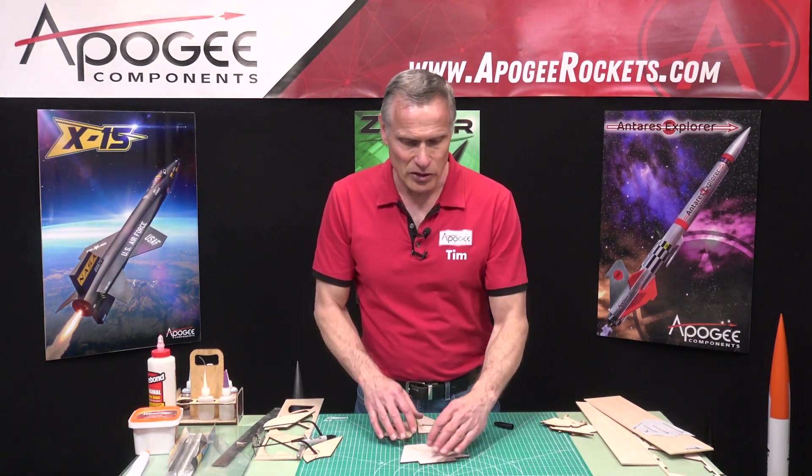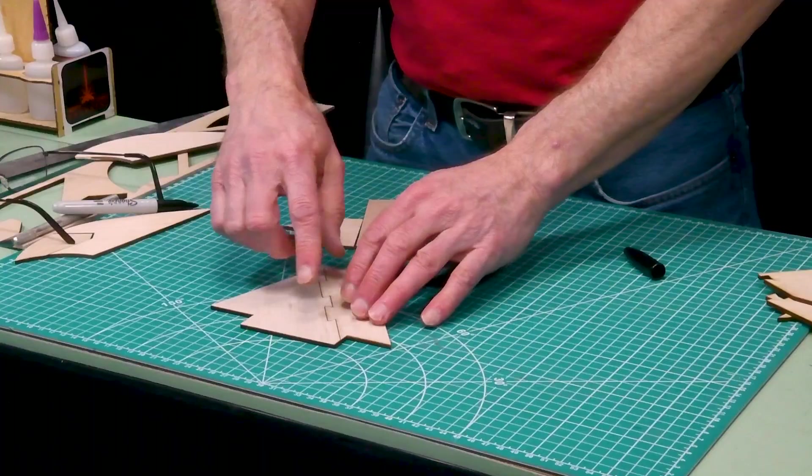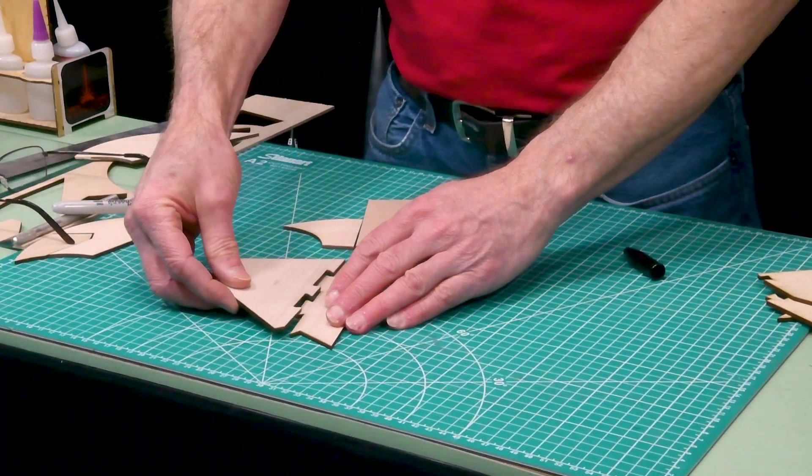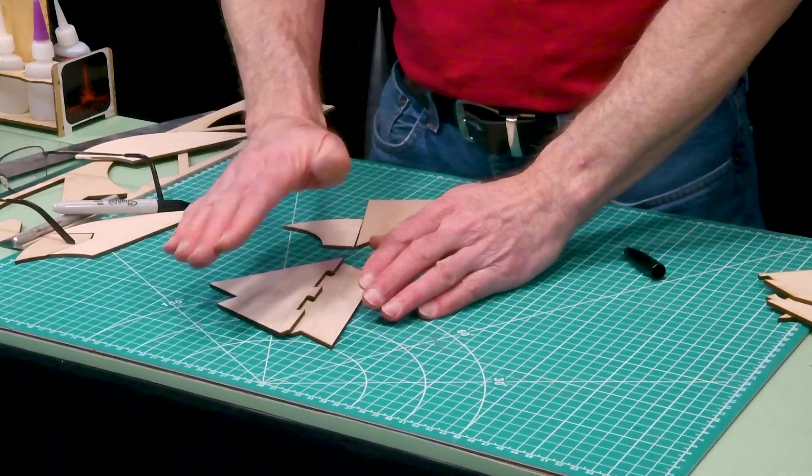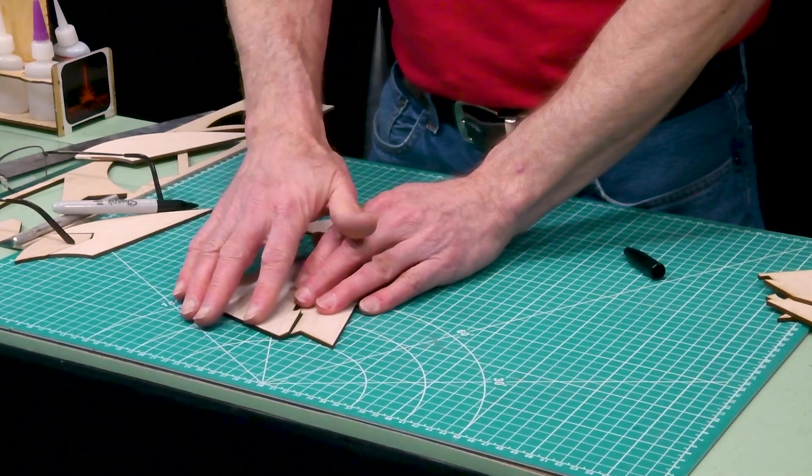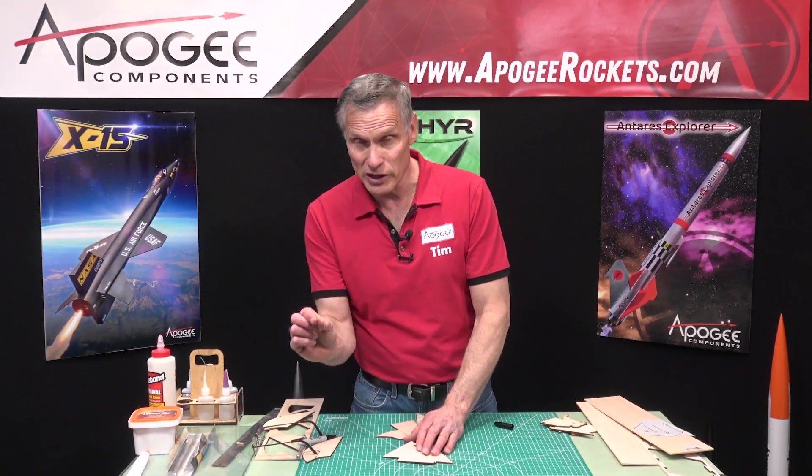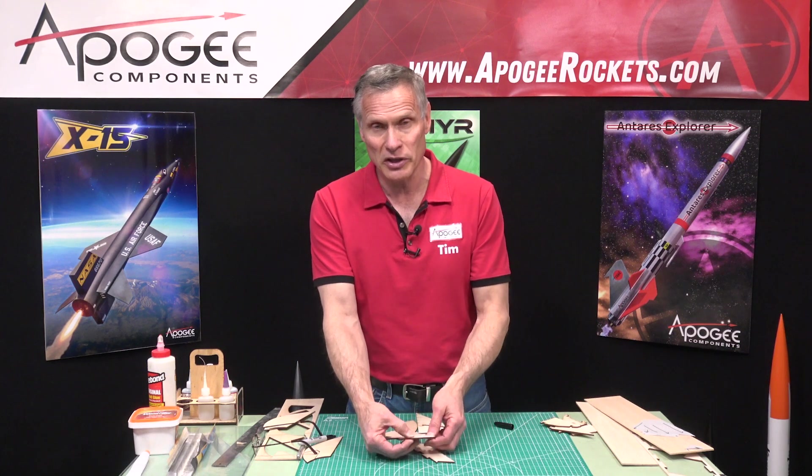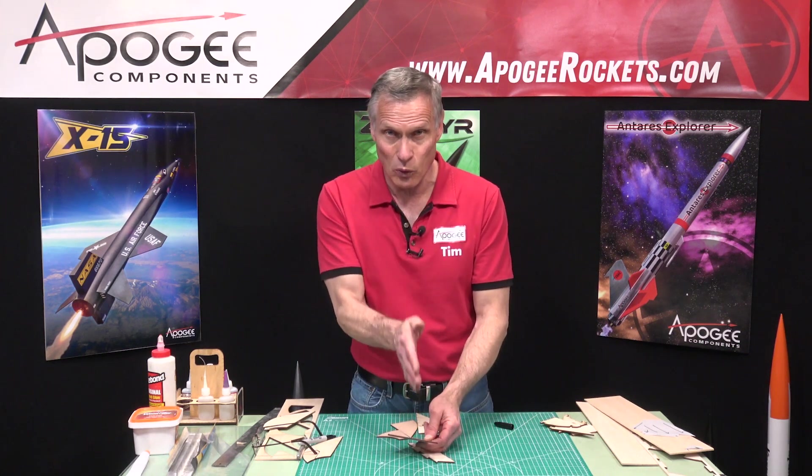Particularly like this one right here, if one was higher than the other, we would sand them down. But then all of a sudden, this becomes really thin and this one has to go in a slot because it's a through the wall fin.